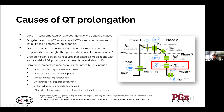One of the big ones is KV11.1, highlighted with a red box. That particular channel is highly susceptible to drug inhibition — it has a very large pocket, making it very easy for drugs to get in and wreak havoc. Although there are other proteins implicated, KV11.1 is the primary driver of drug-induced QT prolongation.